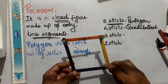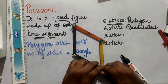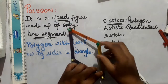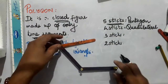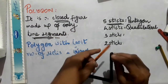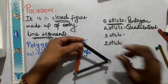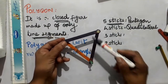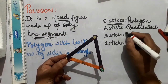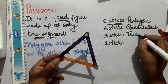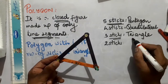Now I want to try with 3 sticks — is it possible or not? I remove one more stick and now I am left with 3 sticks. Yes, here you can see that a polygon with 3 sides is also possible. And which shape is this? This is a triangle. So a polygon with 3 sides is a triangle.